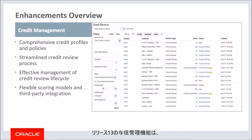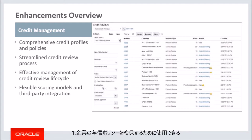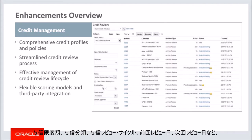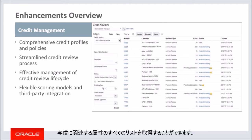The credit management feature in release 13 provides rich and easy-to-use credit management capabilities in the following areas. First, comprehensive credit profiles for customers and customer accounts, which you can use to capture a company's credit policies. You can capture a full list of credit-related attributes such as credit limit, credit classification, credit review cycle, last review date, and next review date.